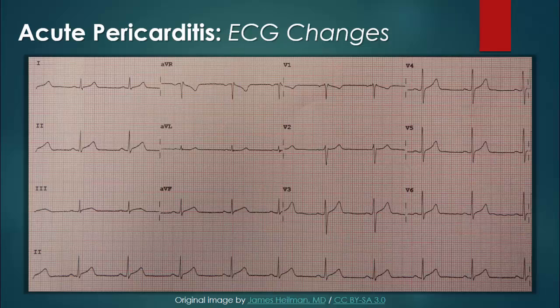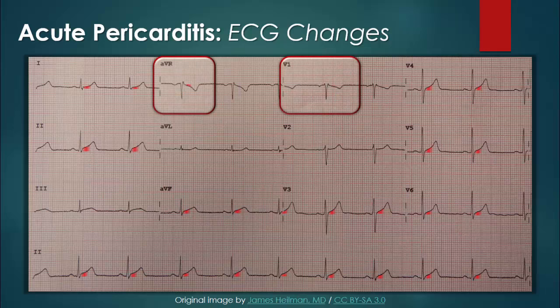The ECG in patients with acute pericarditis goes through four stages. The most common finding is widespread ST segment elevation, which occurs during the first stage and reverts back to normal during the second. While ST segment elevation can occur in most leads, it is usually normal or depressed in leads AVR and V1.